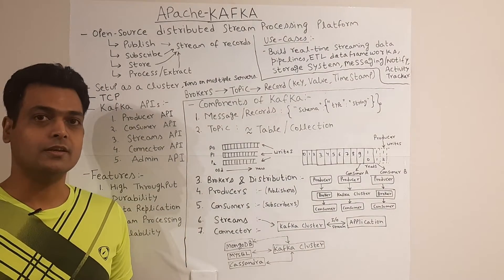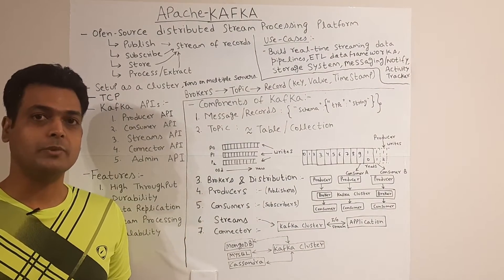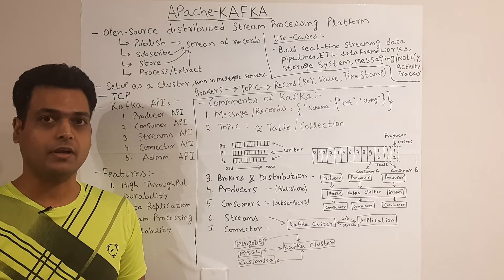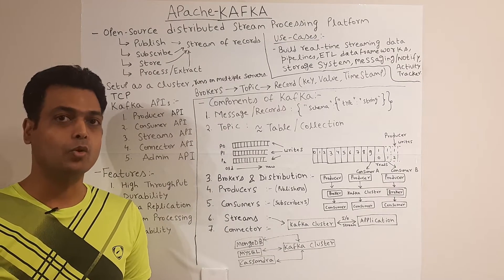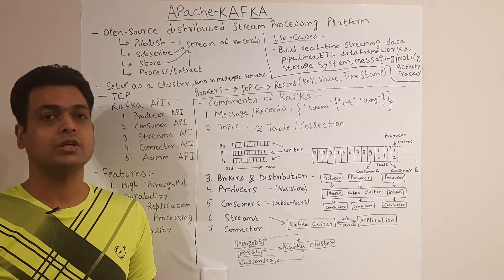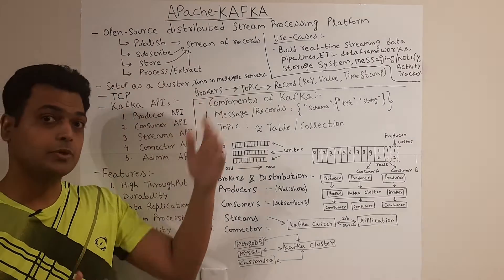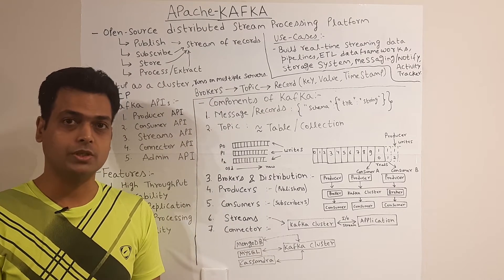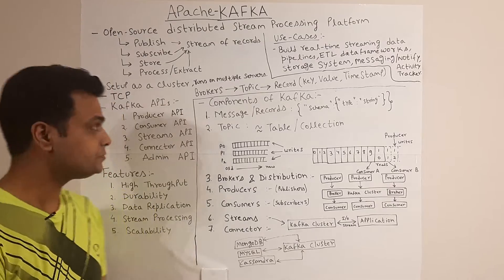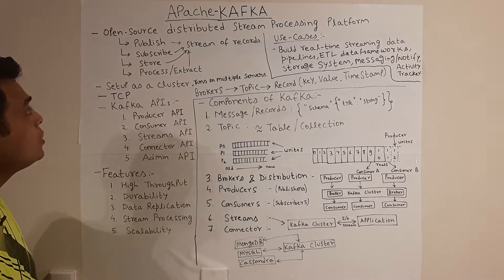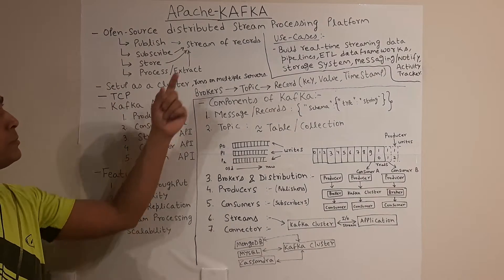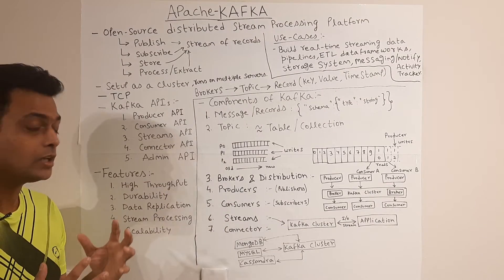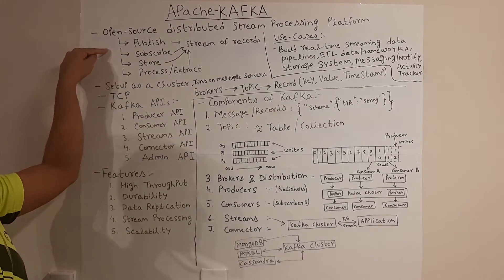Hello everyone, in this video I'll be talking about Apache Kafka. So what is Apache Kafka? Apache Kafka is basically an open source distributed stream processing platform. Apache Kafka basically processes streams of data — using this you can actually publish records.